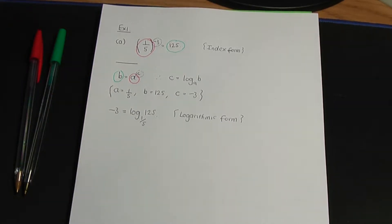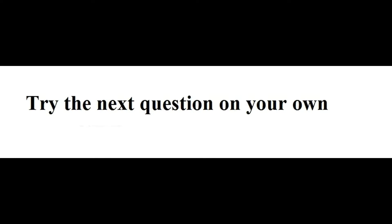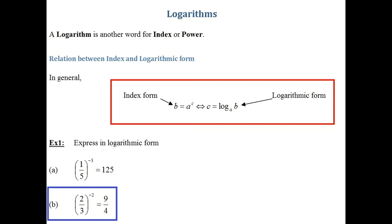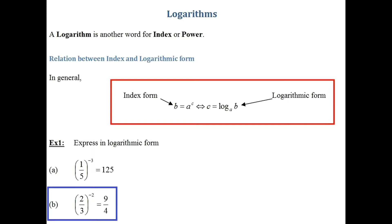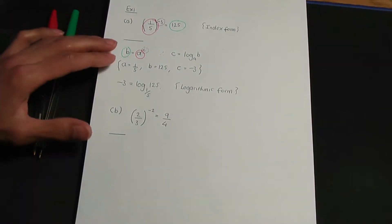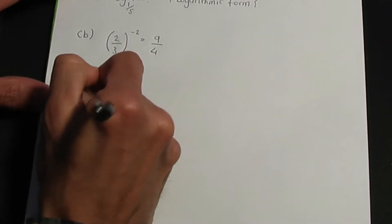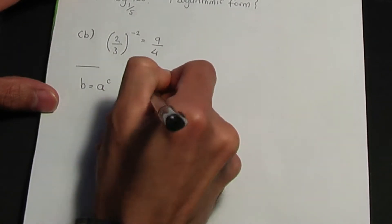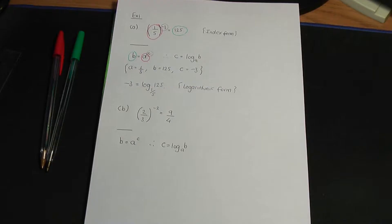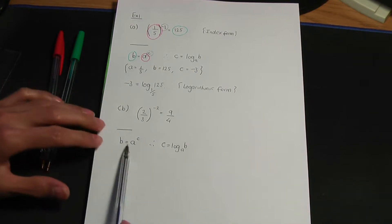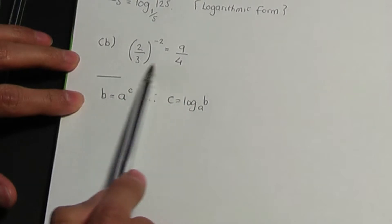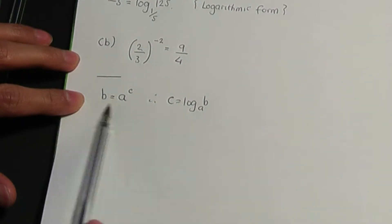I have another example. In part b, we need to express in logarithmic form: two over three to the power of minus two, and that is equal to nine over four. Back to the paper and pen. Let me use the same steps as what I used to solve part a. First of all, let me write down the relation: b equals a to the c, so c is log b to the base of a. We need to figure out what a, b and c are. If I compare the equation in index form with the part of the relation in index form.